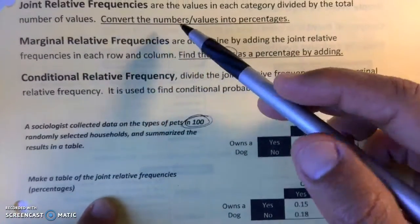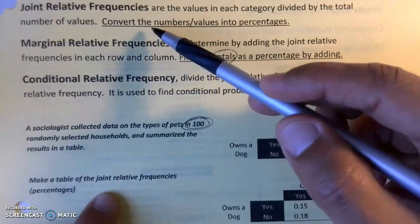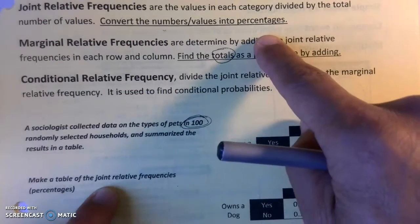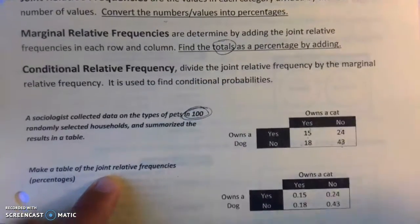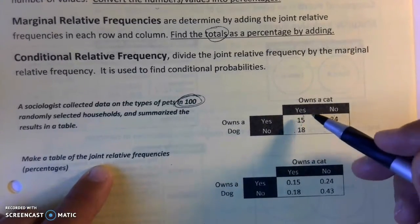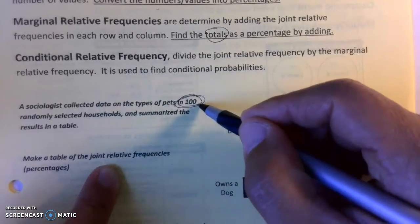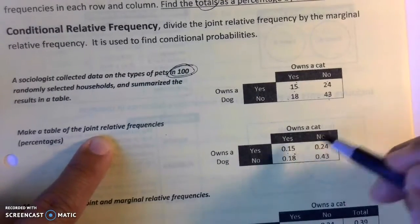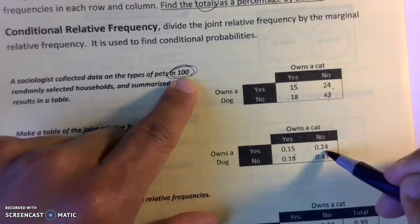The first thing they'll ask you is to make a joint relative frequency, which means converting raw data numbers into percentages. You do that by taking each number divided by the total. The total happens to be 100, so 15 divided by 100 is 0.15. They did the work for you—24 divided by 100 is 0.24.